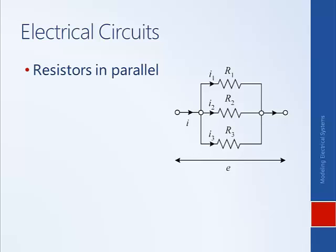Now we will discuss resistors in parallel. Since voltage is a potential difference and all three resistors are connected at the same node on the left-hand side and the same node on the right-hand side, the potential difference across all three resistors is equal — we define that to be E. The current through the individual resistors, however, can be different.